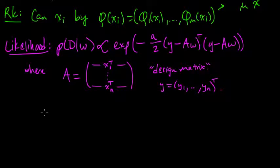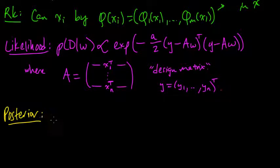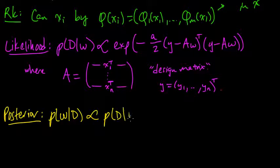Okay, and now we need to compute the posterior distribution. The posterior, always an essential thing to get your hands on. And the posterior distribution is the probability of w given the data, which is proportional to the likelihood times the prior.